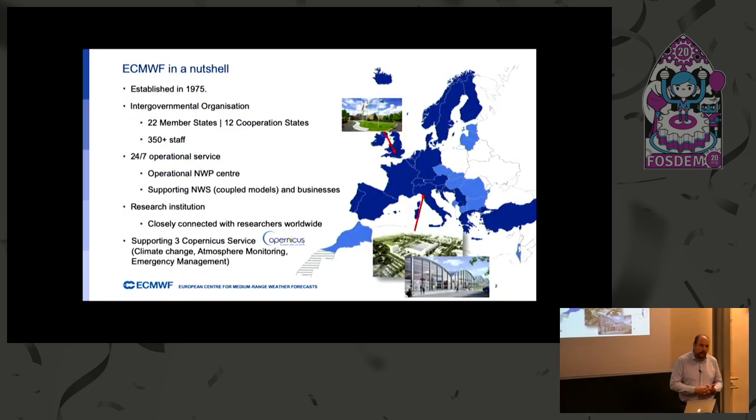What do we do? We are an international organization financed by 34 member states, and we perform operational services, namely weather forecaster, and we support the national weather services in the exploitation of our data. We do research in this field, and we also provide some Copernicus services. So free access to some of our data and some data that we compute, especially for that.